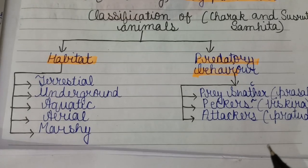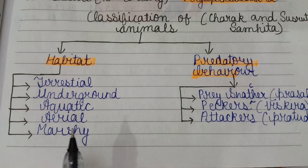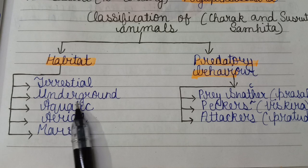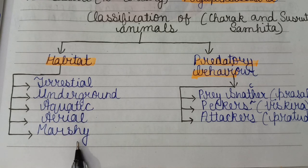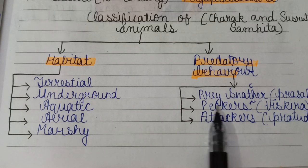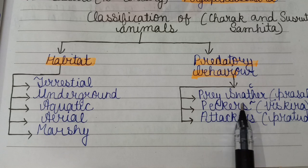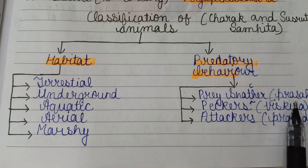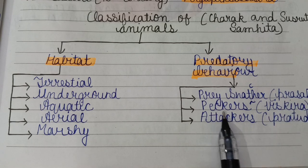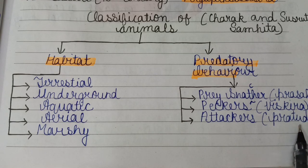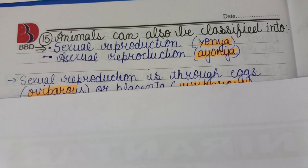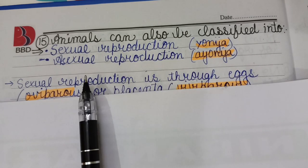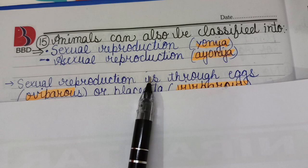On the basis of habitat, animals are categorized as terrestrial, underground, aquatic, aerial, and marshy. On the basis of predatory behavior, they are classified as prey, grazers (Sanskrit: sparsha), pickers (Sanskrit: vischira), and attackers.